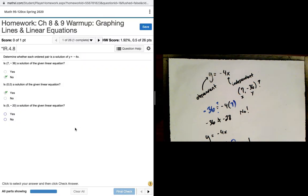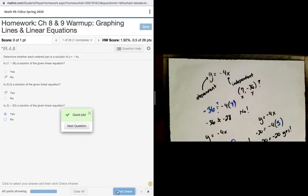And then lastly, is 5 negative 20 a solution? So the original is y equals negative 4x. I plug in 5 for x. I get negative 4 times 5. Is that equal to negative 20? Yes, it is. I get negative 20 is equal to negative 20. So we can verify by plugging in values of x and y, whether or not these points fall on that line.